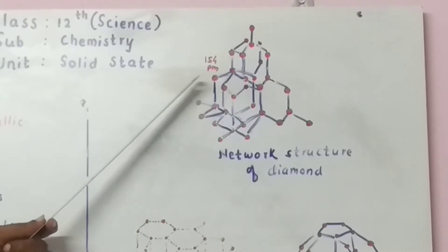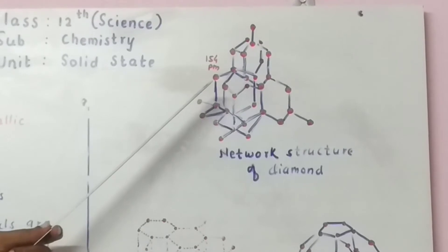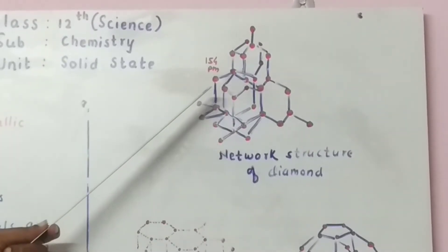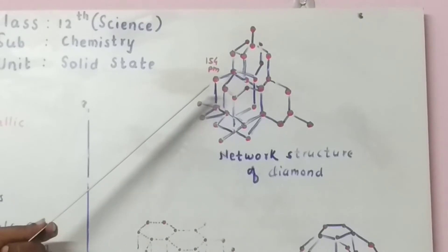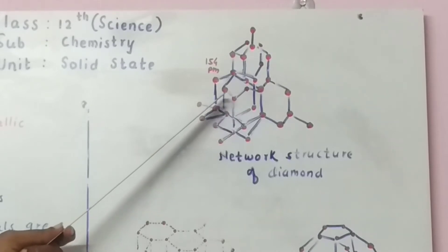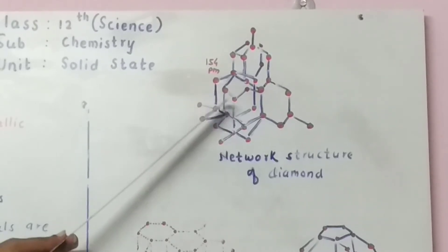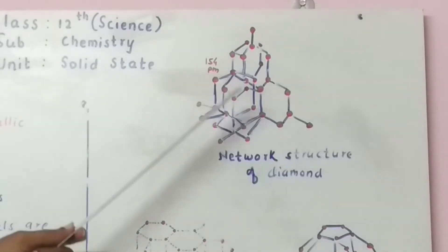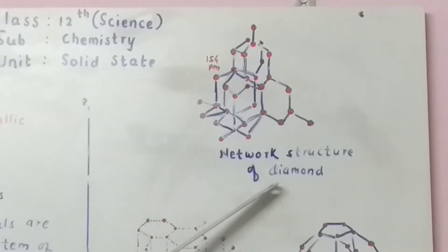The carbon atoms are sp3 hybridized which are arranged in a regular tetrahedron in which carbon atoms present at the center and at the corners of tetrahedron. So this is giant structure of diamond.